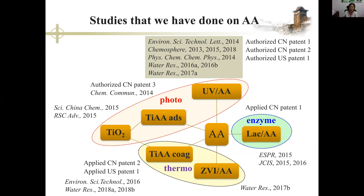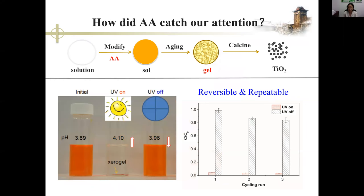Here are the studies we have so far done on AA, including three systems: a photochemical system, an enzymatic system, and a thermodynamic system. What I present tonight is mainly focused on the UVAA process and the coagulant composed of titanium and AA. You might be curious — how did AA catch our attention?